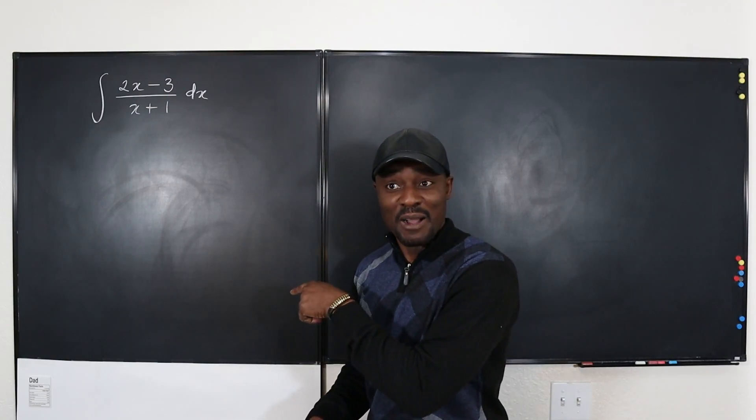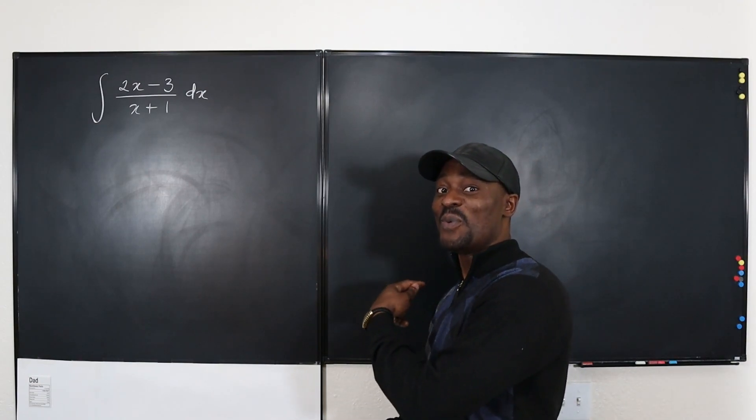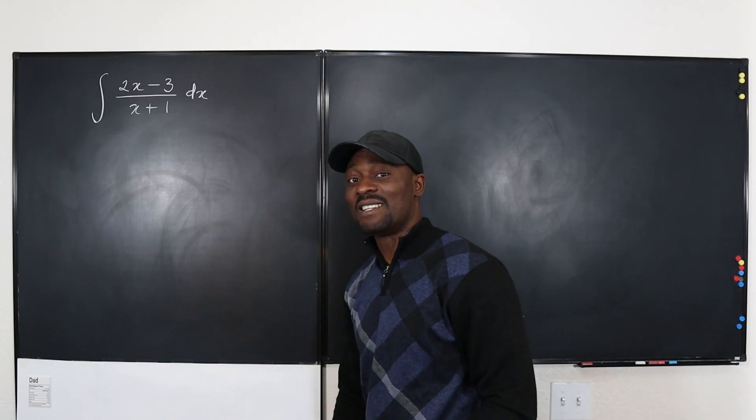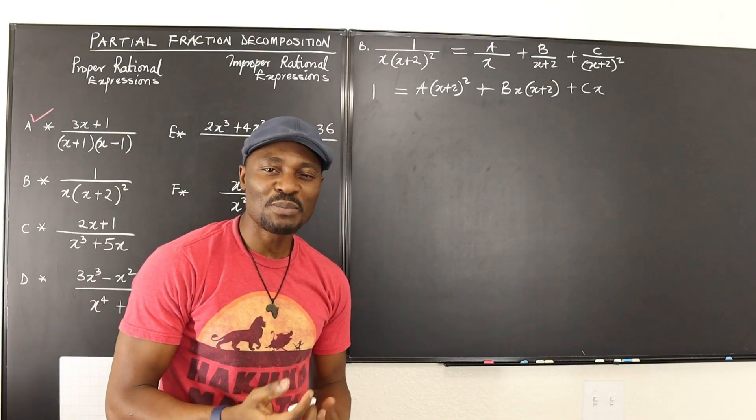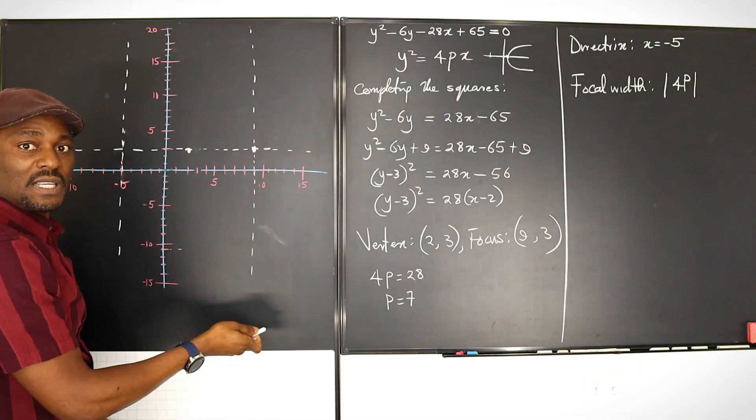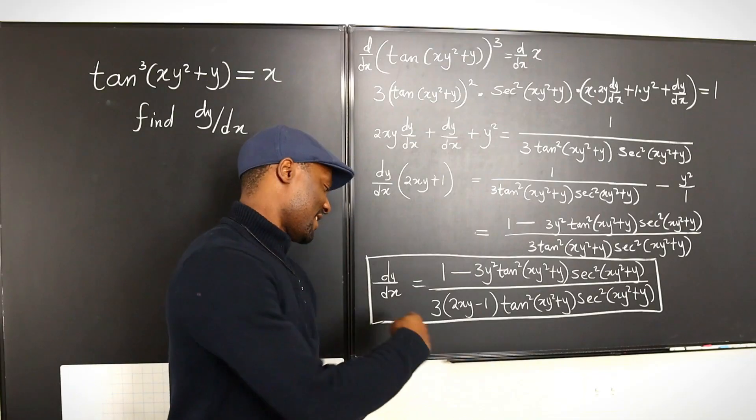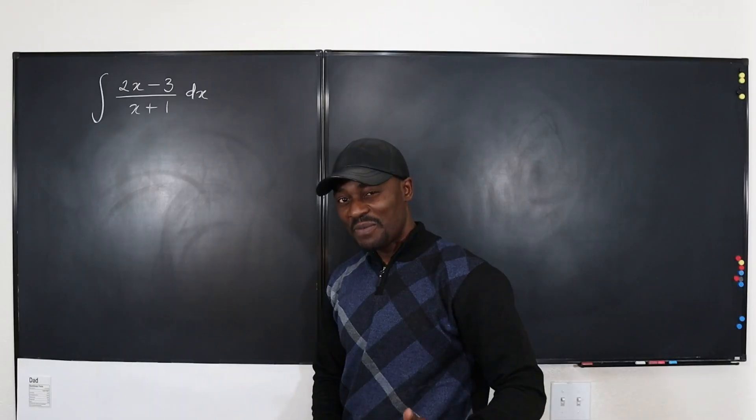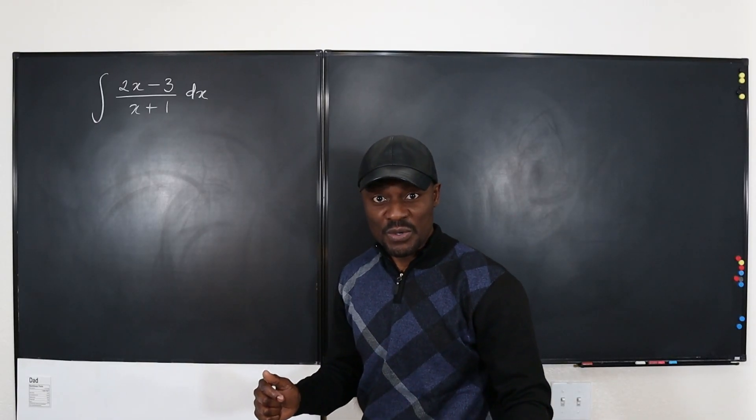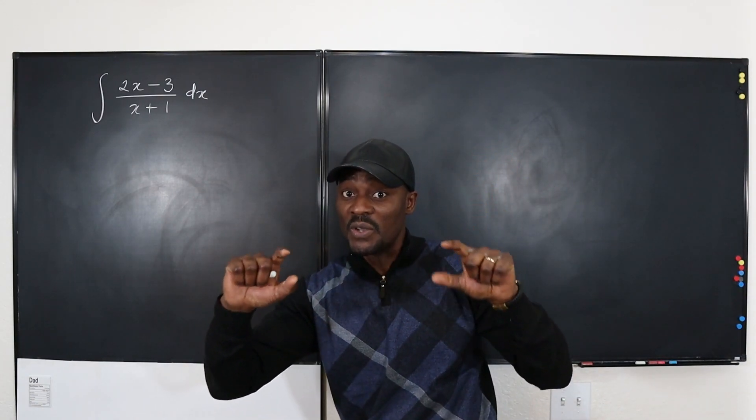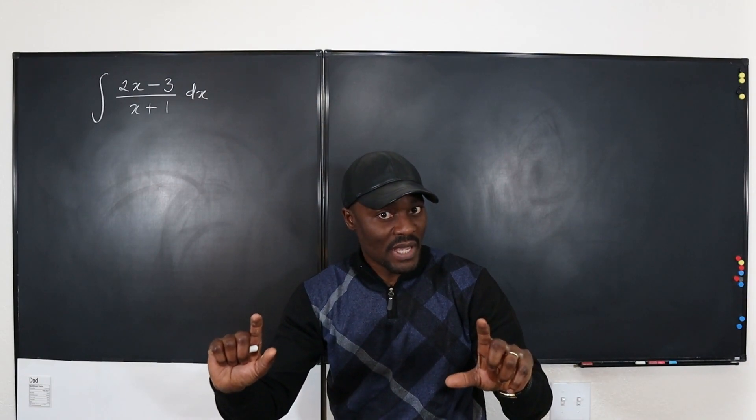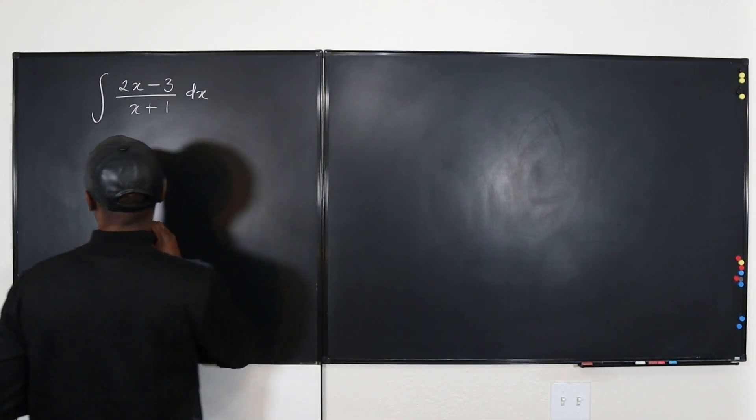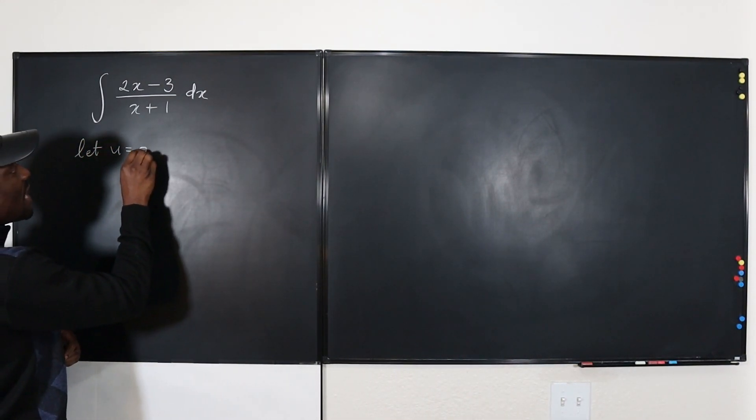Let's start with U substitution and then I might show you another way of doing it. You're going to end up with the same answer no matter what you do. Let's get into the video. The first thing you want to do is decide what's going to be your U. Every time you have a rational function, you want to focus on the denominator, not the top, the bottom. So I'm going to choose X plus 1 as my U. Let U be X plus 1.